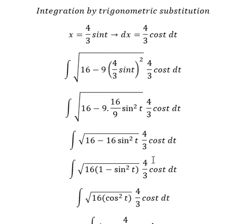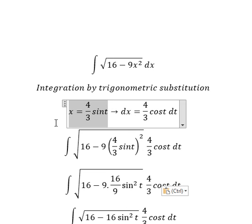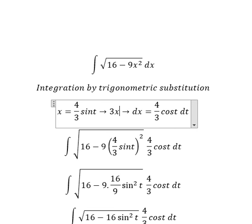For t, that is this one, so we divide both sides by 4 over 3, so we have 3x over 4.